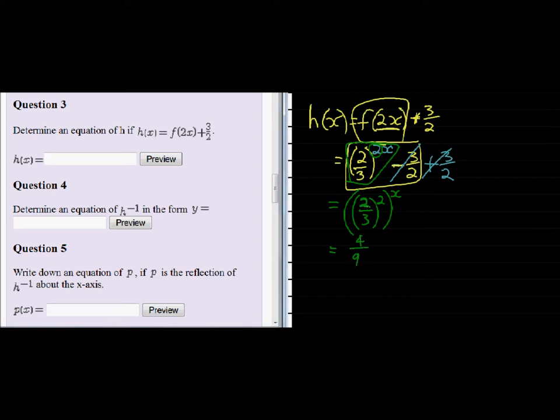What did I do? I said 2 times 2 and 3 times 3 to get rid of the square, to the power of x. So I have a new base 4 over 9 to the power of x.